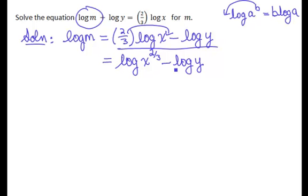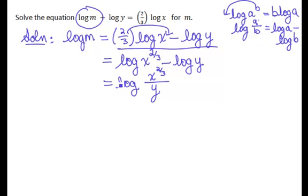So now each of these terms begins with the logarithm of a quantity. We don't have the number in front. Now we want to look at how to combine a subtraction of two logs. The property we'll use is if you have log of a fraction, that is the same as log of the numerator minus log of the denominator. So using that property in reverse, if you have a difference of two logs, you can write it as a single log of the quotient of those quantities. So that gives us that log of x to the two-thirds divided by y is equivalent to log of m.